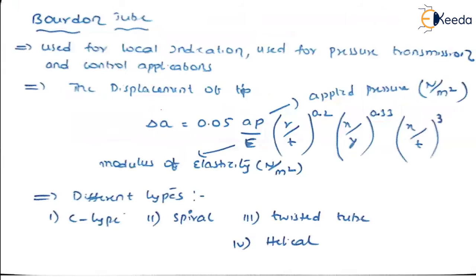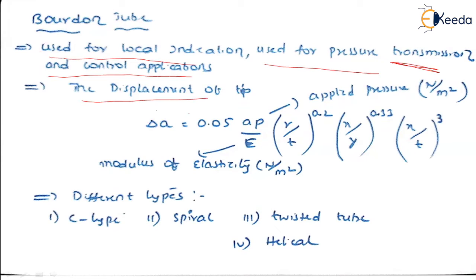Now we go to the bourdon tube. Bourdon tubes are available in different shapes: C-type, helical type, spiral type. The C-type is commonly used for local indication and is the best instrument for pressure transmission and control applications. The displacement of the tip, delta, is given by: δ = 0.05 × a × p / E × (r/t)^x × (x/y)^0.33 × (x/t)^power.